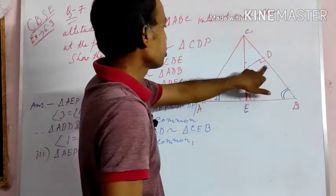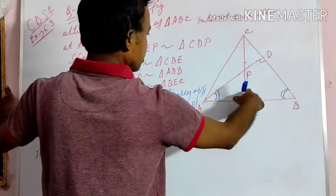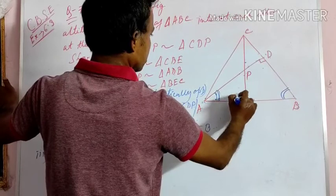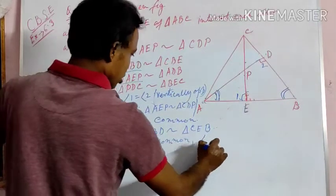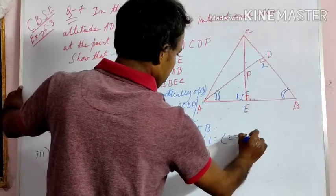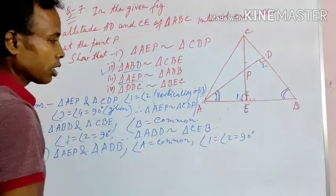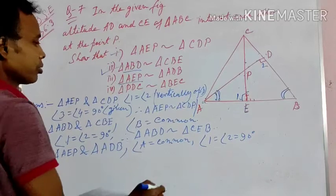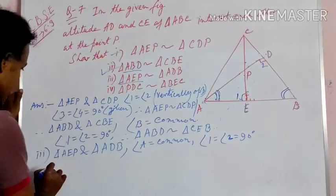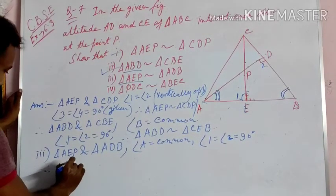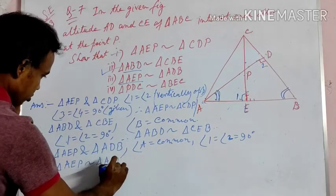Angle 1 (angle AEP) and angle 2 (angle ADB) are both equal to 90 degrees. Since two angles are equal for both triangles — angle A is common, and the other pair are each 90 degrees — therefore triangle AEP is similar to triangle ADB.